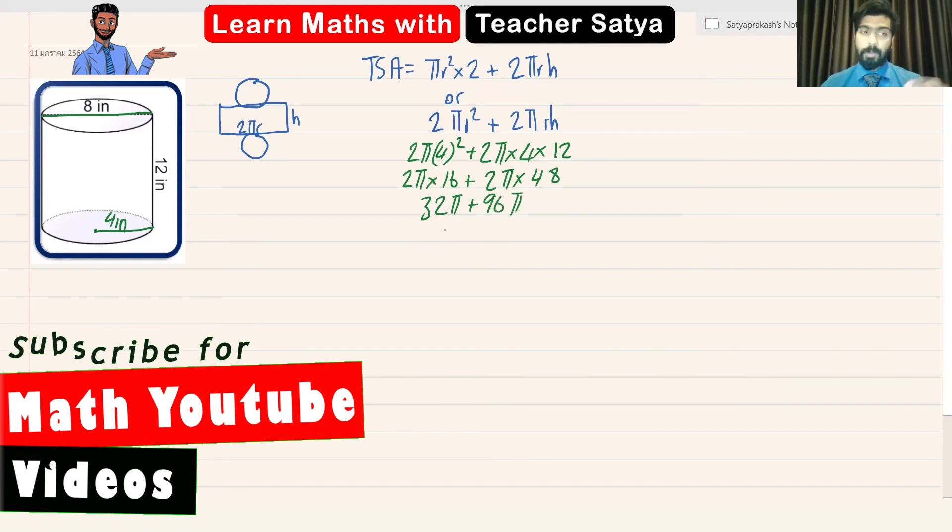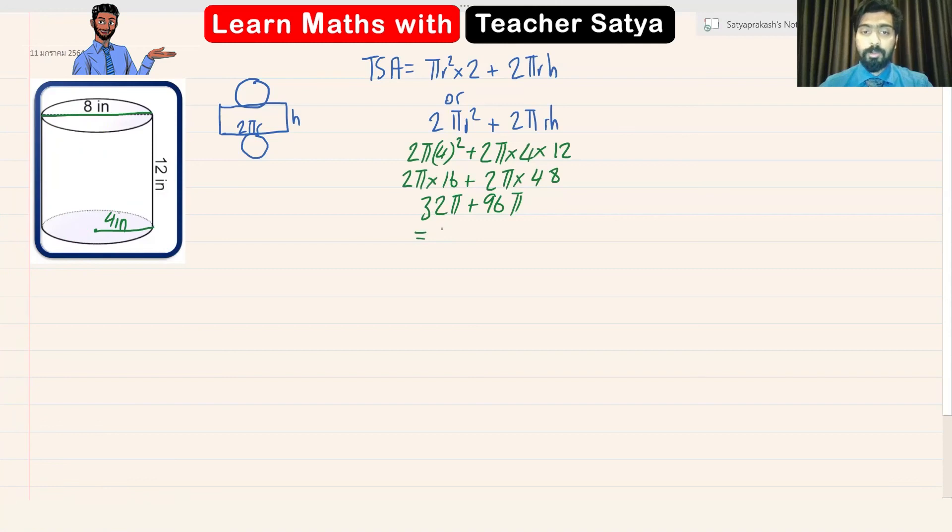I'm still keeping the value of pi. I'm still leaving pi as pi. Now let's add this up. Thirty-two plus ninety-six is going to give us one hundred and twenty-eight pi inch squared.